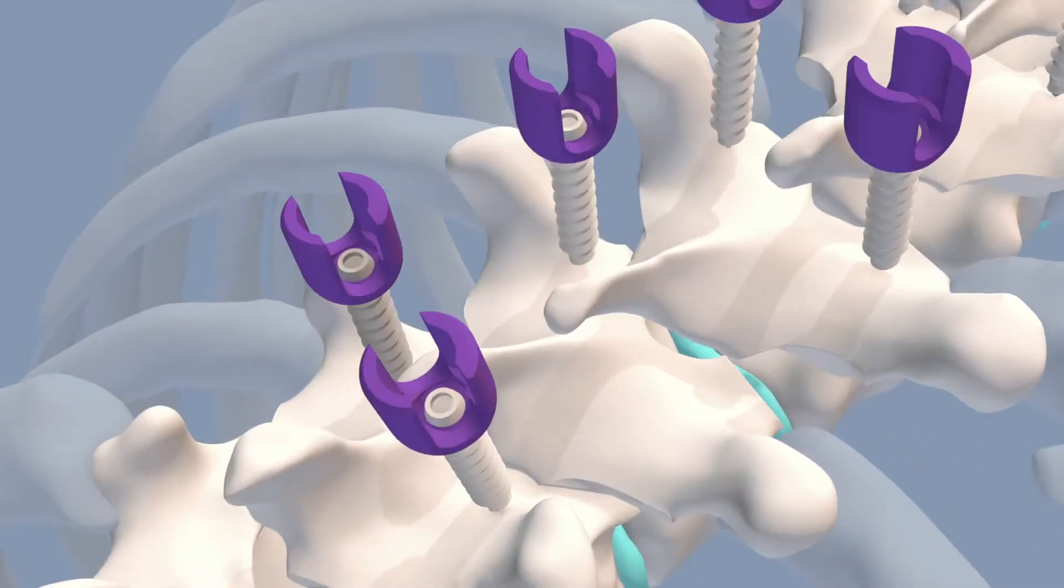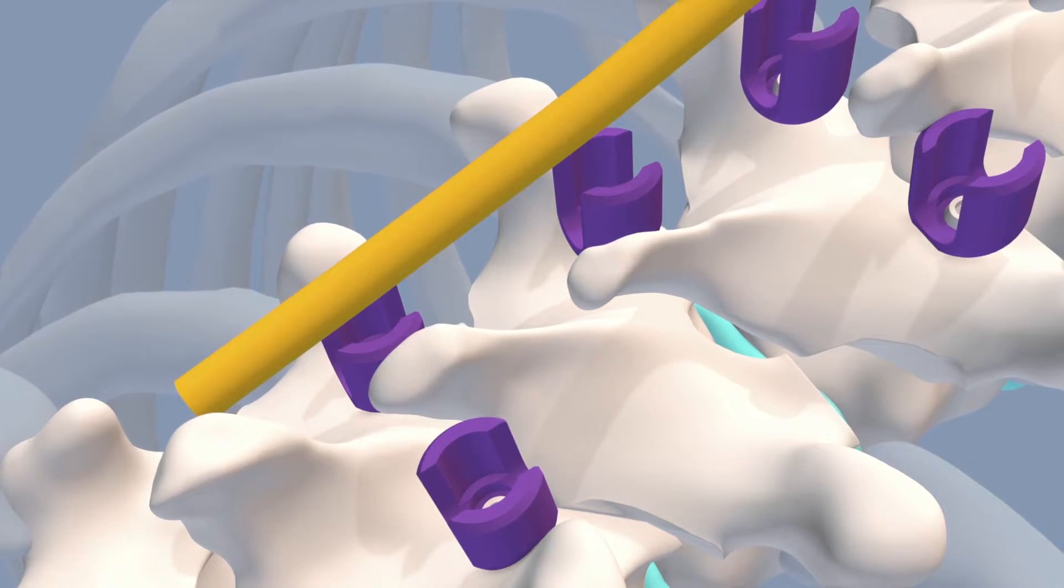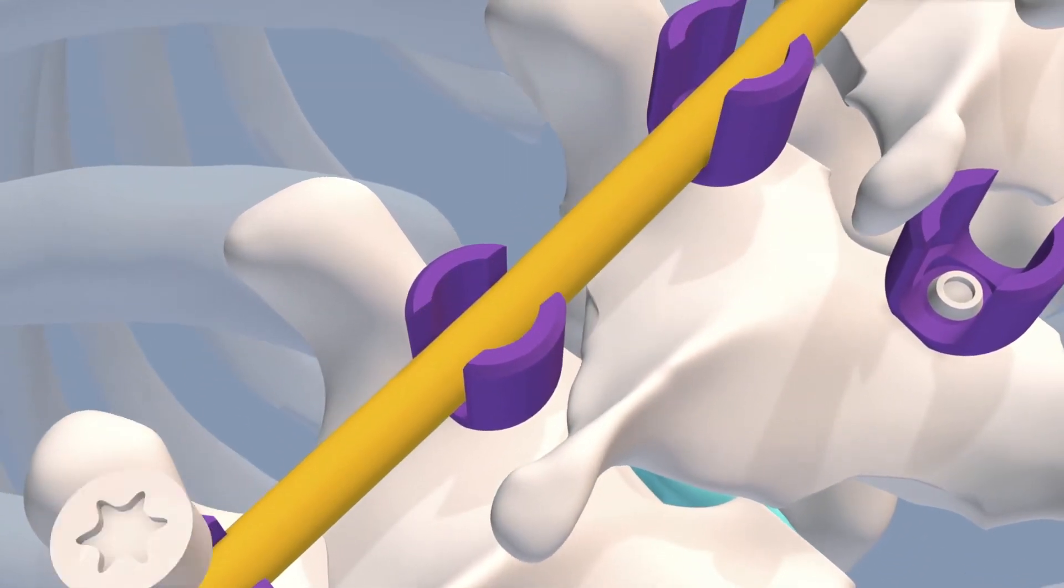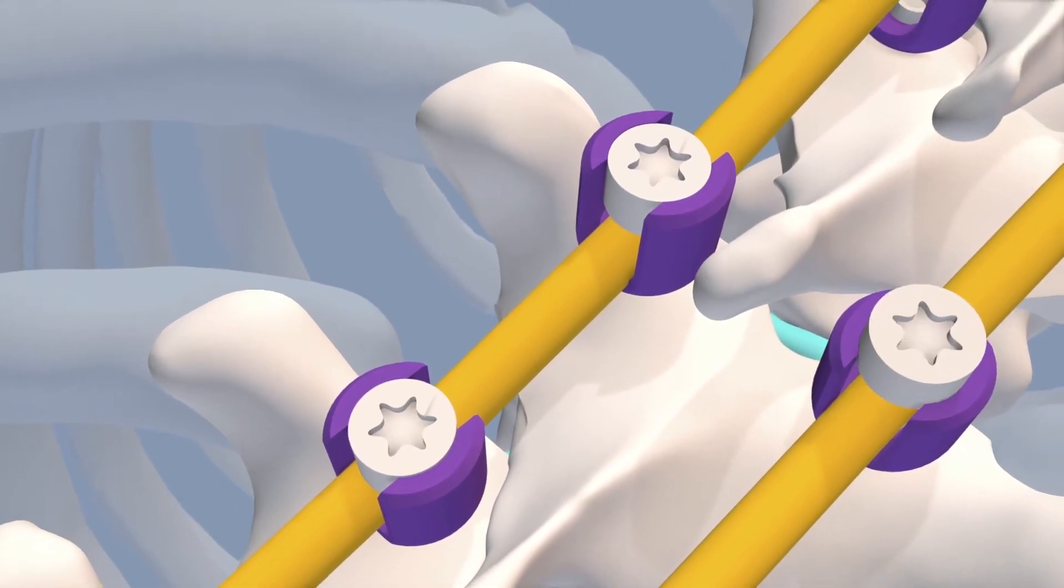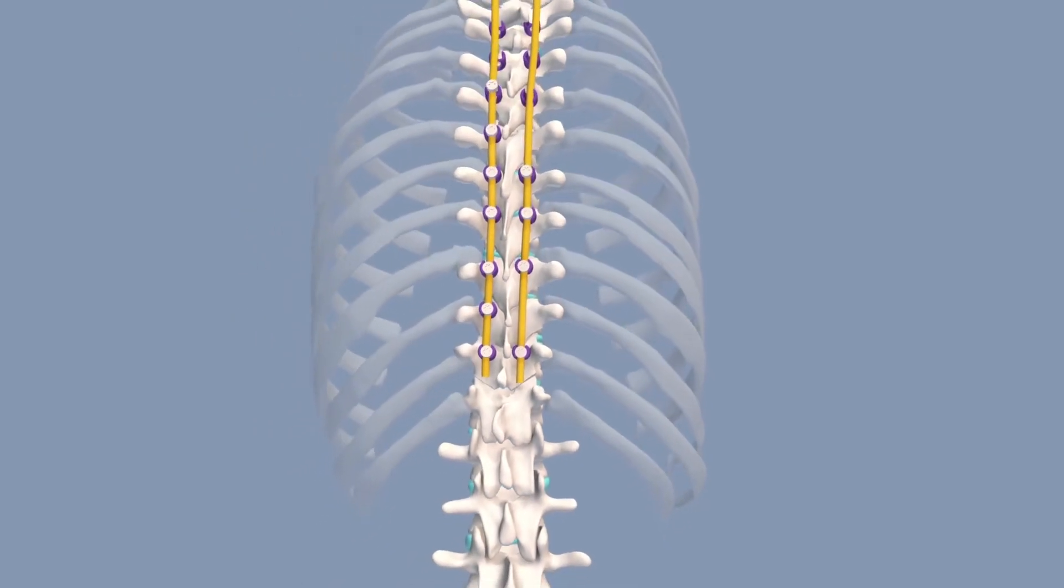Next, screws and/or hooks are then attached to the vertebrae at the curved section and the rods are attached to the screws or hooks. These screws and hooks act as anchor points to secure the rods. Notice how the spine has straightened out now.